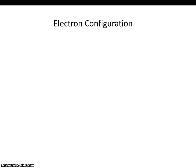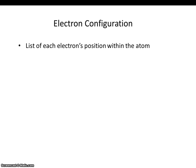In this video, we'll be completing an electron configuration. An electron configuration is a list of each element's position within the atom, and it's very similar to an orbital filling diagram. It's just a different way of representing the same information.